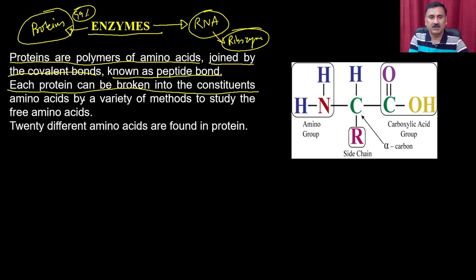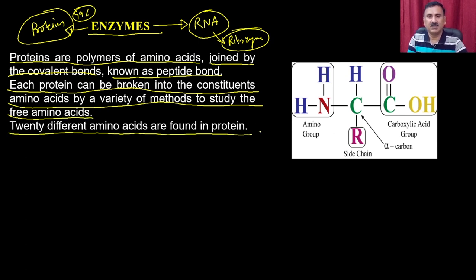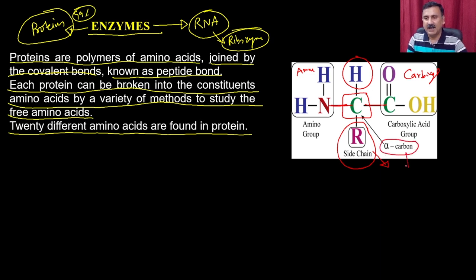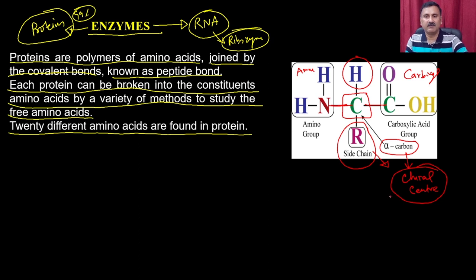Each protein can be broken into its constituent amino acids by a variety of methods. There are 20 different types of amino acids present in proteins. The general structure of an amino acid has a central carbon called the alpha carbon. Around this central carbon you have the carboxyl group, the amino group, a hydrogen, and a functional group called the side chain or R group. Because of this, the alpha carbon is a chiral center, and amino acids can exhibit isomerization.